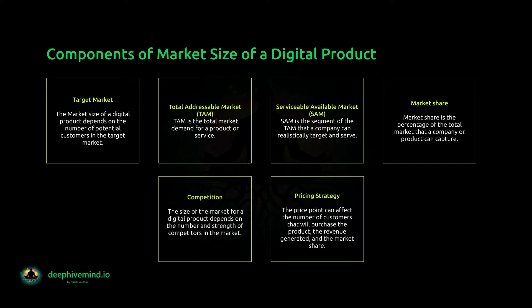Serviceable available market (SAM) — SAM is the segment of the TAM that a company can realistically target and serve. It represents the market size that is within the company's reach, taking into account factors such as market penetration, product pricing, and distribution channels. Market share — market share is the percentage of the total market that a company or product can capture, calculated by dividing the company's revenue by the total revenue of the market. Competition — the size of the market for a digital product depends on the number and strength of competitors. Analyzing the competition helps businesses estimate the potential market size, identify gaps, and develop differentiation strategies. Pricing strategy is also an essential component, as the price point can affect the number of customers, revenue generated, and market share.